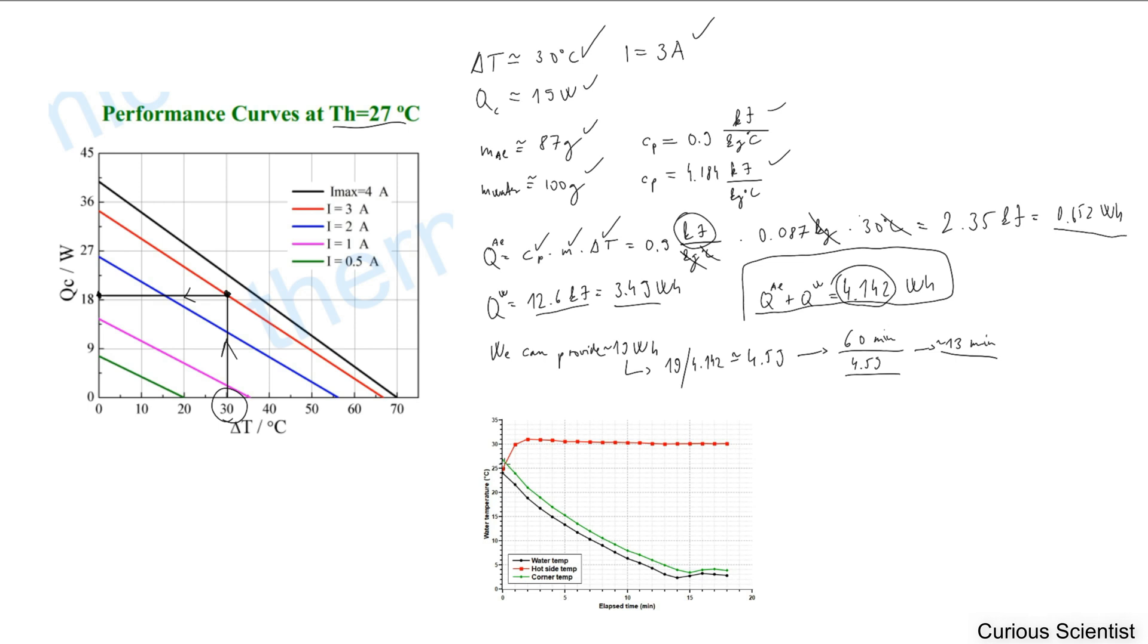Then we have the corner temperature and the water temperature. In this case it might be different, and the water temperature can be lower than the corner temperature